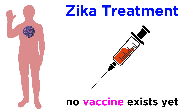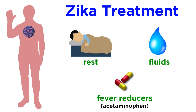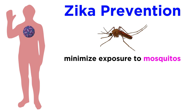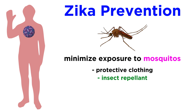Since there isn't a vaccine to protect against Zika, or specific treatment for that matter, Zika infections are usually treated with extra rest, fluids, or fever reducers like acetaminophen. As far as prevention, the primary recommendations are to protect yourself and loved ones from mosquito bites, either by protective clothing, insect repellent, or making sure mosquitoes can't get inside the home.